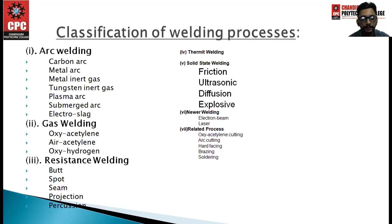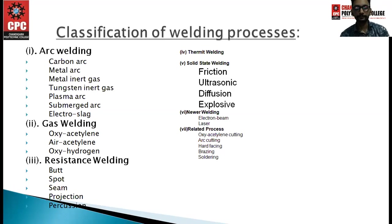Fourth part is thermite welding and fifth is solid state welding, which includes friction welding, ultrasonic welding, diffusion and explosive welding. Sixth is newer welding, which includes electron beam and laser. The last category is related processes: oxy-acetylene cutting, arc cutting, hard facing, brazing and soldering.